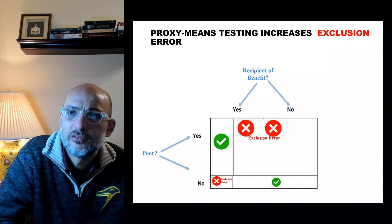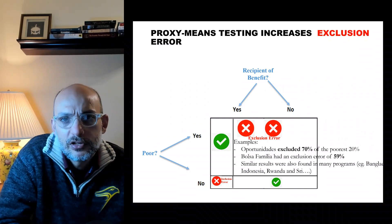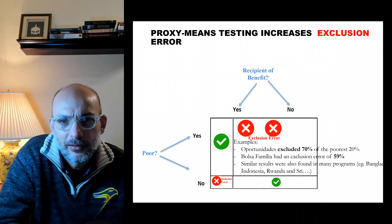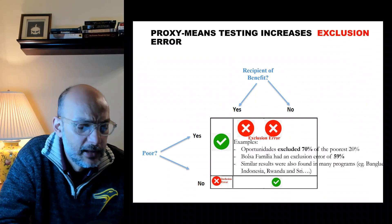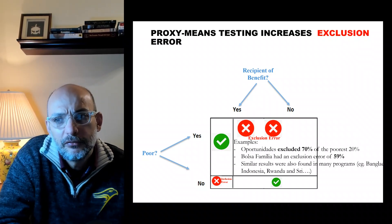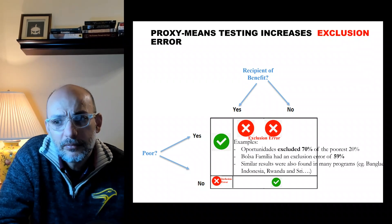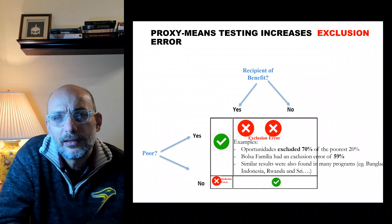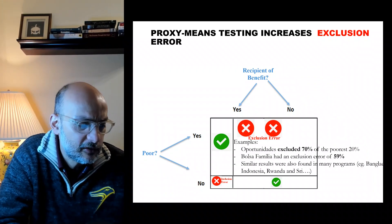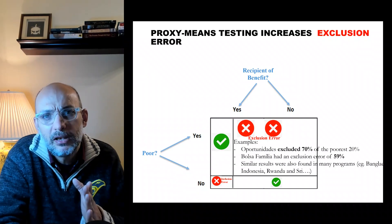Exclusion error is the worst one — like sending an innocent person to jail — a child not receiving the benefit due to administrative barriers. Looking at celebrated cash transfer programs in middle-income countries like Oportunidades in Mexico and Bolsa Familia in Brazil: one evaluation found that 70 percent of the poorest 20 percent are missed. The same results appear in Bangladesh, Indonesia, Rwanda, Zimbabwe, and many other countries. It's logical: complexity pushes away the very poor.